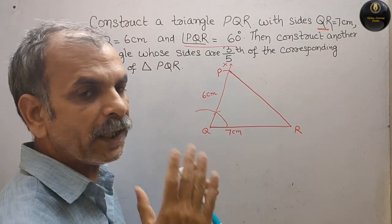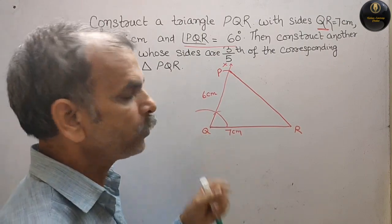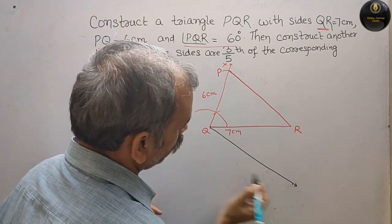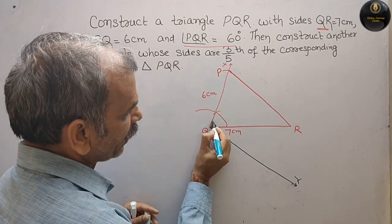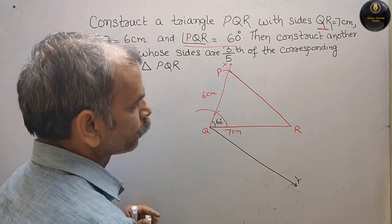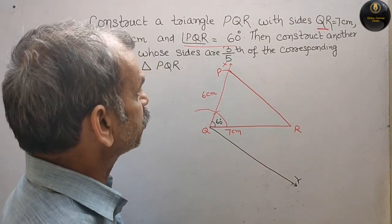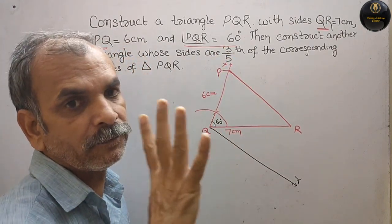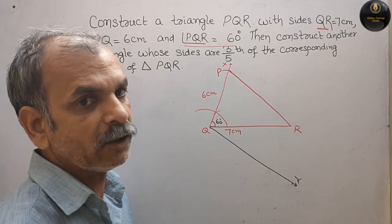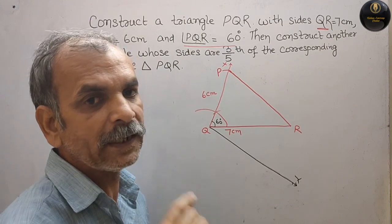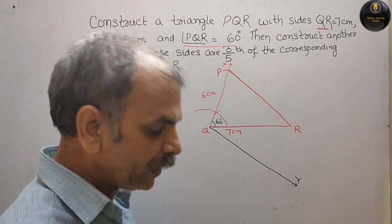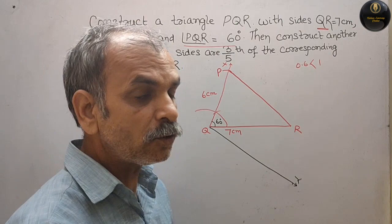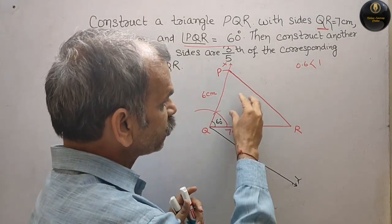Next step is: we have to make an acute angle from Q. This is your ray QY. और यह angle हमारा 60 degree था। अब देखो, इसमें क्या दिया है — 3 by 5। तो कौन सा बड़ा है, उसमें 5। 3 by 5 को अगर divide करेंगे, you will get 0.6 — that means 0.6 is less than 1, तो हमारा जो दूसरा triangle बनेगा वो इससे छोटा बनेगा।